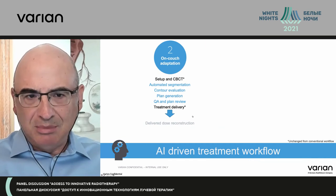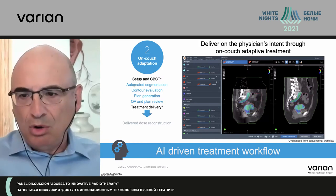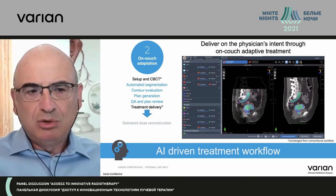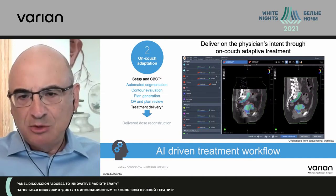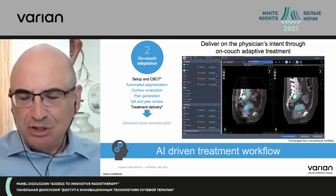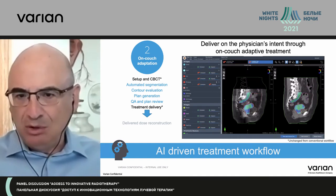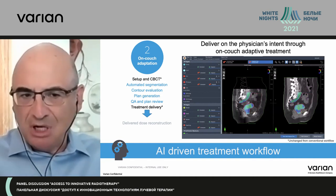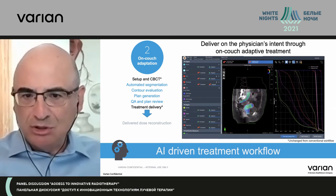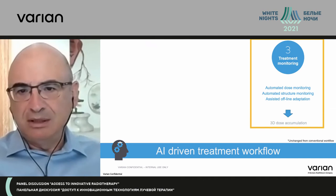More importantly, during the time the patient is on the table — the on-couch adaptation — the system does automatic segmentation of all organs at risk, so you only have to check that they're correct. There are very easy tools to correct the anatomy. You can see it's pointing out the bladder that's now sitting in a different position — it's higher. The system then automatically generates a plan: the adapted plan versus the scheduled plan, and you pick the one you want. If things haven't changed much, you keep the scheduled plan; if things have changed, you take the adapted plan. The QA is done by an independent software check, and then the treatment is delivered.